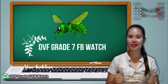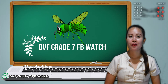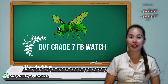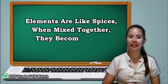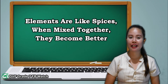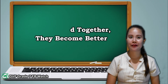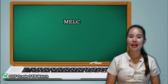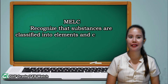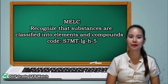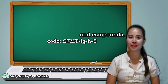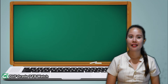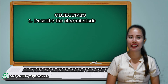Hello, grade 7 students! We are now in module 2 of our quarter 1, which is about elements are like spices — when mixed together, they become better. Our most essential learning competency expects you to recognize that substances are classified into elements and compounds. Here are the learning targets.